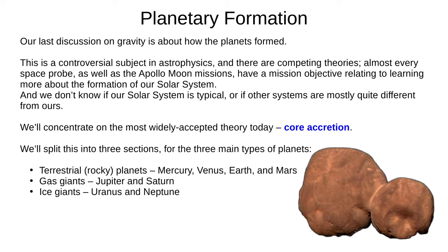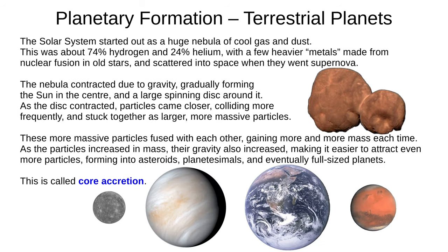We'll split this into three sections: rocky planets (Mercury, Venus, Earth and Mars), gas giants (Jupiter and Saturn), and ice giants (Uranus and Neptune). The solar system started out as a huge nebula of cool gas and dust — about 74% hydrogen and 24% helium, with a few heavier metals made from nuclear fusion in old stars and scattered into space when they went supernova. In astrophysics, metal refers to any element heavier than helium. This nebula contracted due to gravity, forming the Sun at the centre with a large spinning disk around it. As the disk contracted, particles came closer, collided more frequently, and stuck together to form larger, more massive particles. These more massive particles fused with each other, gaining more and more mass over time. As they increased in mass, their gravity also increased, making it easier to attract even more mass. They gradually formed into asteroids, planetesimals, and eventually full-sized planets. This process formed the terrestrial planets and is called core accretion.